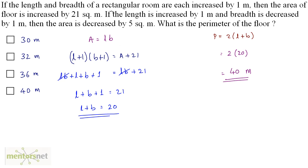The question gave extra information: if the length is increased by 1 meter and the breadth is decreased by 1 meter, the area decreases by 5 square meters. You could have used this to calculate the actual length and breadth, but there was no need for that. We calculated the perimeter directly.